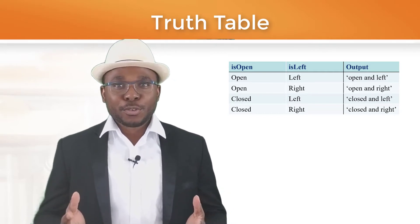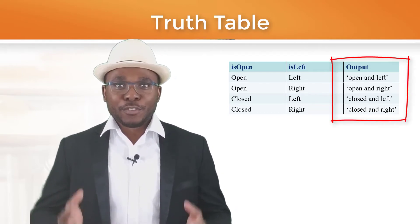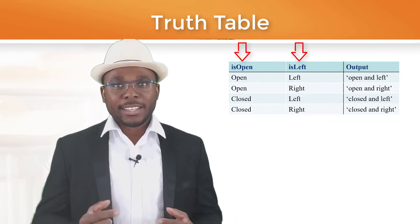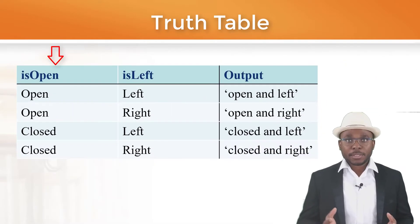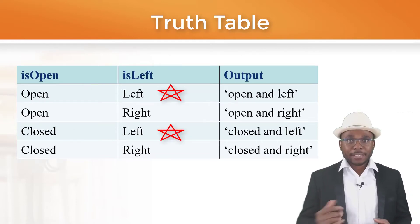At the end of this tutorial, you will be able to output the results of a truth table with two boolean inputs. The first input, if true, is open, else is closed. The second input, if true, is left, else is right.